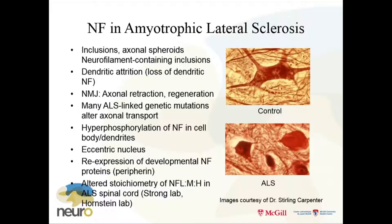This dendritic atrophy is going to have quite a profound effect on the electrical conduction and integration of synaptic connections to other neurons. We have hyperphosphorylation of neurofilaments in the cell bodies and dendrites — normally the KSP repeats are less phosphorylated. People say non-phosphorylated versus phosphorylated; that's not really true — we're talking about gradations. We have retraction of the neuromuscular junction and regeneration troubles, altered stoichiometry of NFL, and re-expression of developmental neurofilament proteins, particularly peripherin.